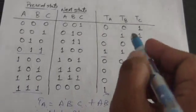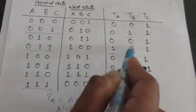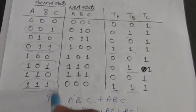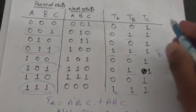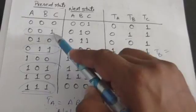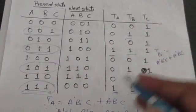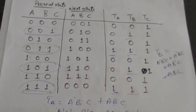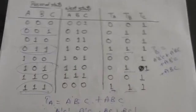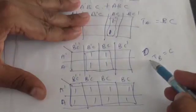Similarly, we write the minimized function for TB and TC. TB is 1 in the rows where A B C is 0 0 1, 0 1 1, and 1 1 1, giving TB equals A'B'C plus A'BC plus ABC. After minimizing this with a K-map, we get TB equals C. For TC, we find that TC equals 1 always.